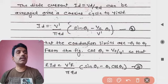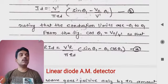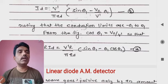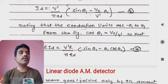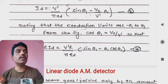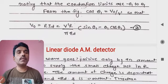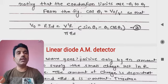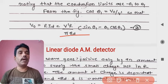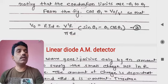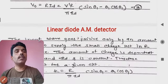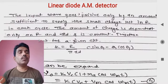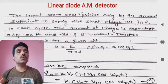The conduction limits are from minus θ1 to θ1, and cos θ1 = V0/V-dash. The output voltage V0 = id·R, and substituting gives: V0 = (V-dash·R / π·rd)·(sin θ1 − θ1·cos θ1). This is equation 2, with equation 1 being the diode current id. The input signal goes positive only by an amount sufficient to supply the small charge lost in R in each cycle.